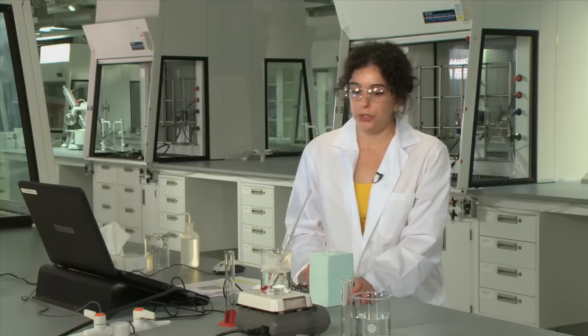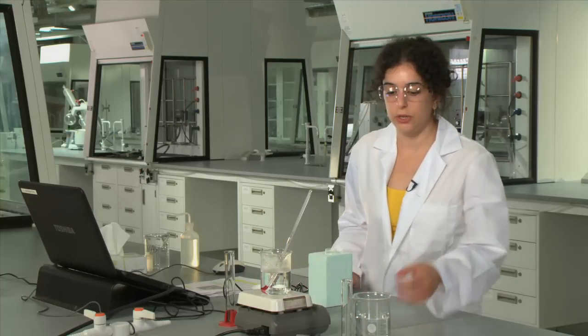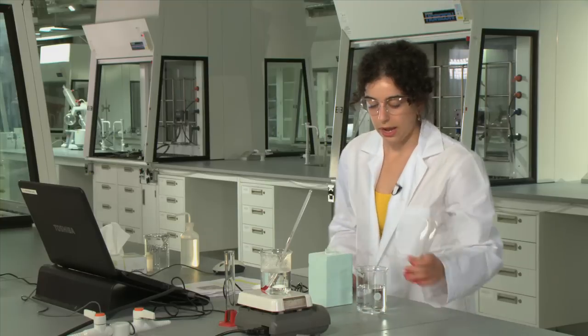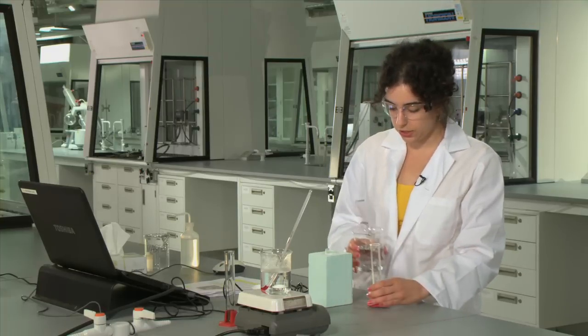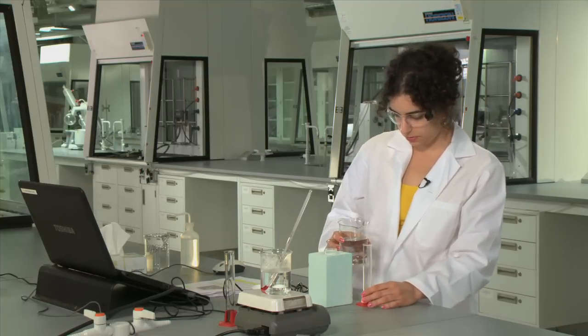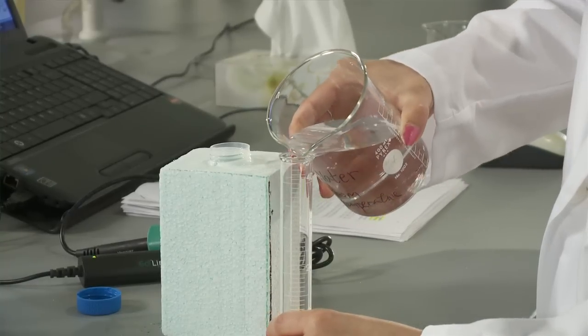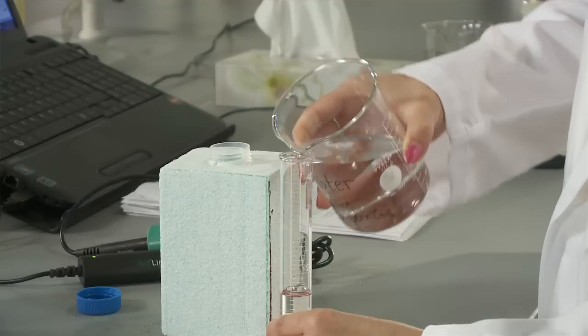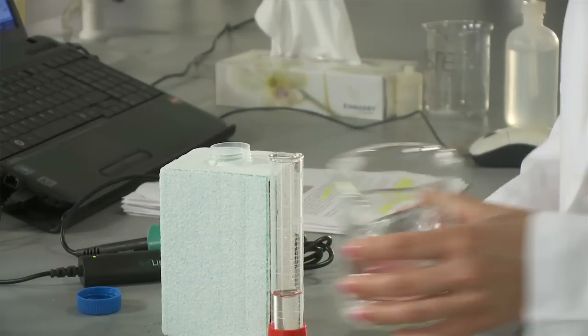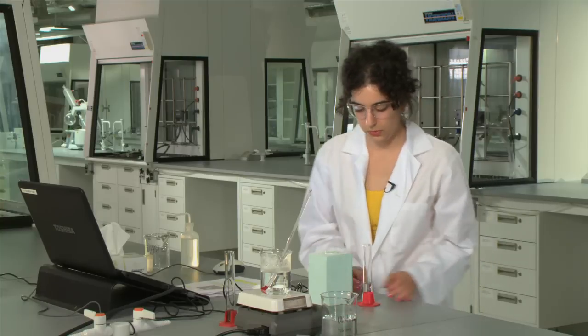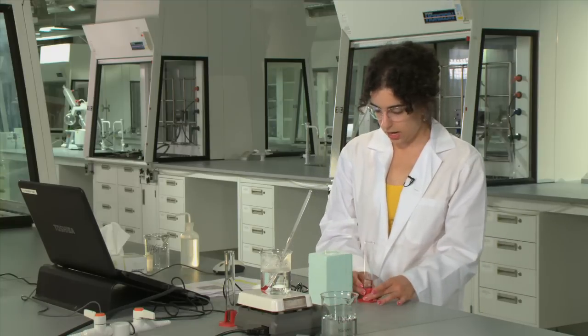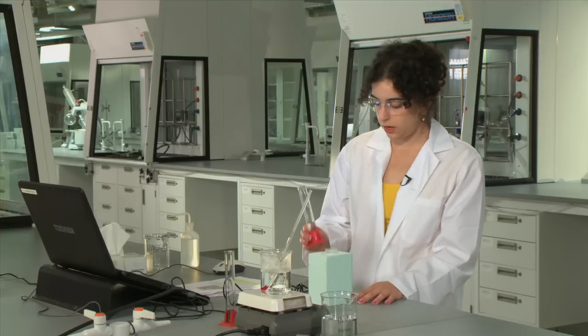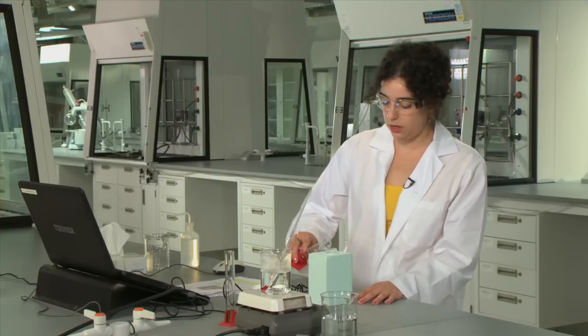So to do this what we're going to do is take 15 milliliters of room temperature water and we're going to measure this out with a graduated cylinder. And we're going to put our water in the calorimeter.